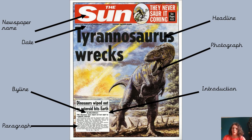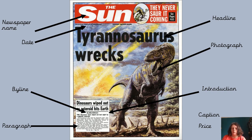There are two features not on this newspaper but that you do get on other newspapers. We have the price, so we know how much the newspaper costs — that's often quite close to the name of the newspaper and the date. Also missing is a caption. A caption does the same job as it did in a non-chronological report: it explains what is in the photograph, just a sentence to say what's going on. Those are all the key features of a newspaper report you need to know. If you want to watch this part of the video again, you can do.